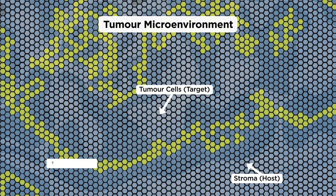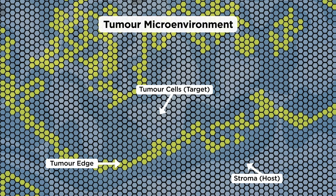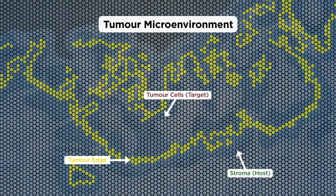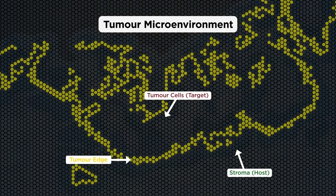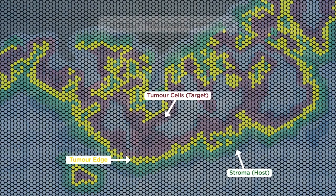First, we identify the tumour edge in the image using a set of explicit rules based on data obtained by digital image analysis outputs and results. Then the tumour stroma interface zone is extracted and ranked by proximity to the tumour edge.